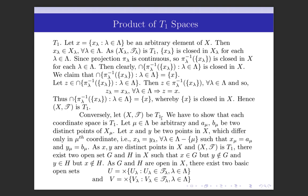Conversely, let (X,T) be T1; we have to show that each coordinate space is T1. Let μ∈Λ be arbitrary, and suppose aμ and bμ are two distinct points of Xμ. We use the same trick: let x and y be two points in X which differ only in the μth coordinate, that is, xλ = yλ for every λ ≠ μ, and xμ = aμ and yμ = bμ.